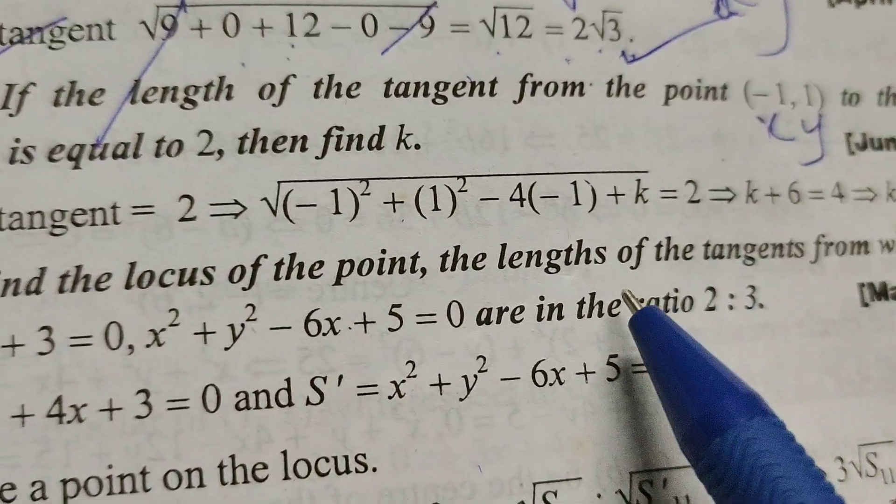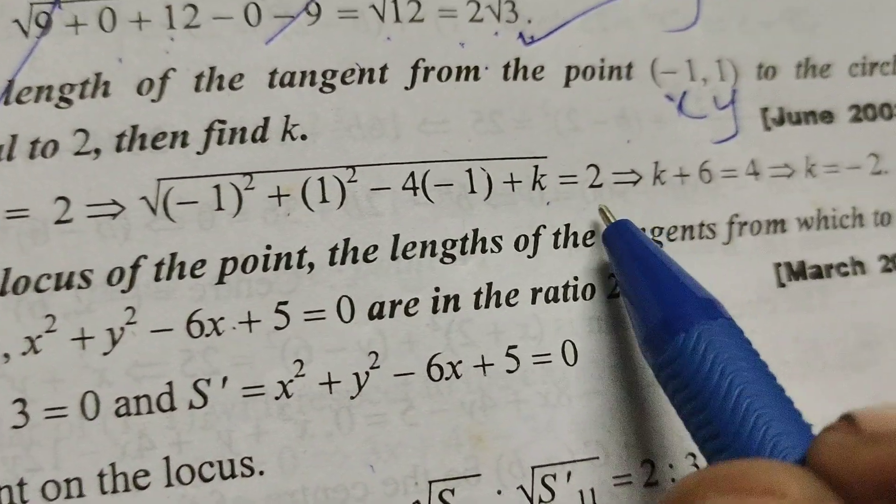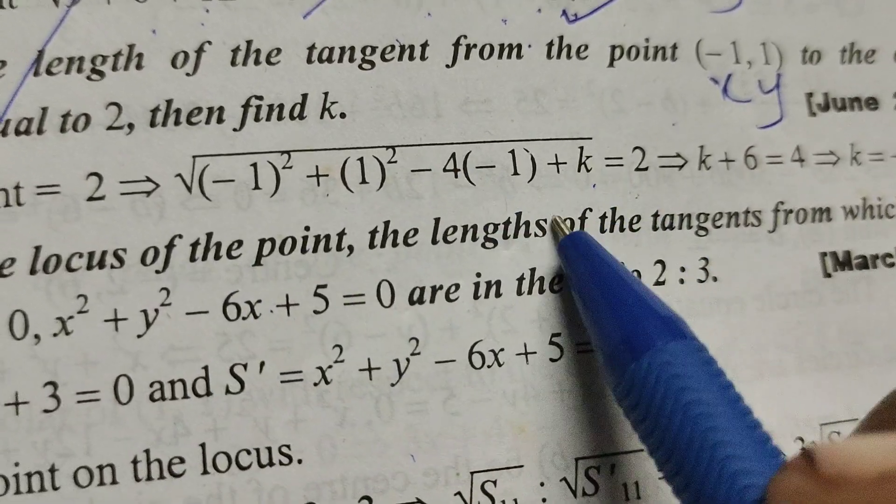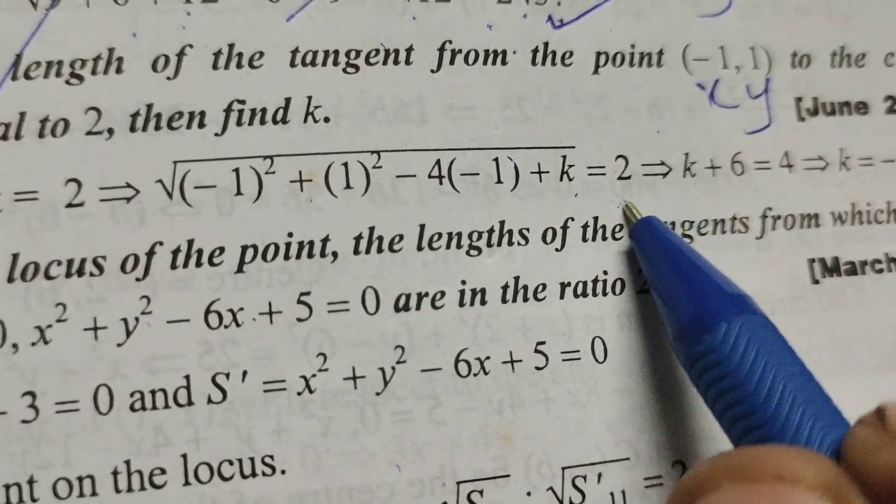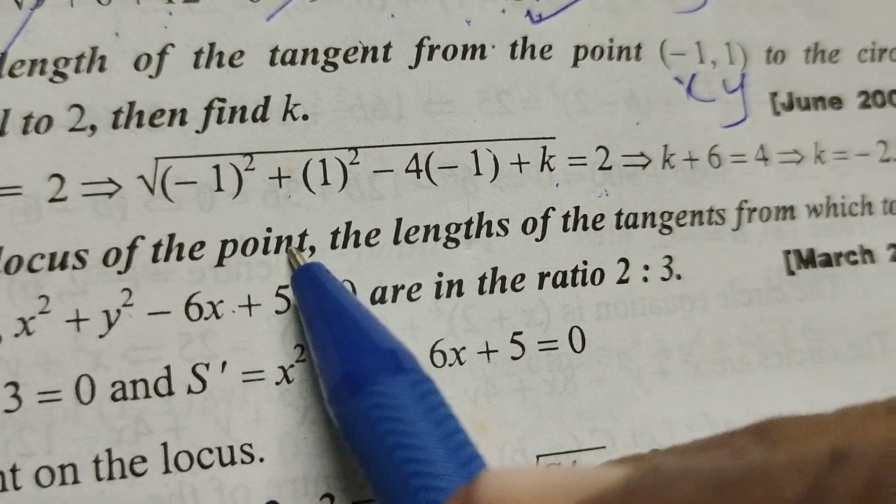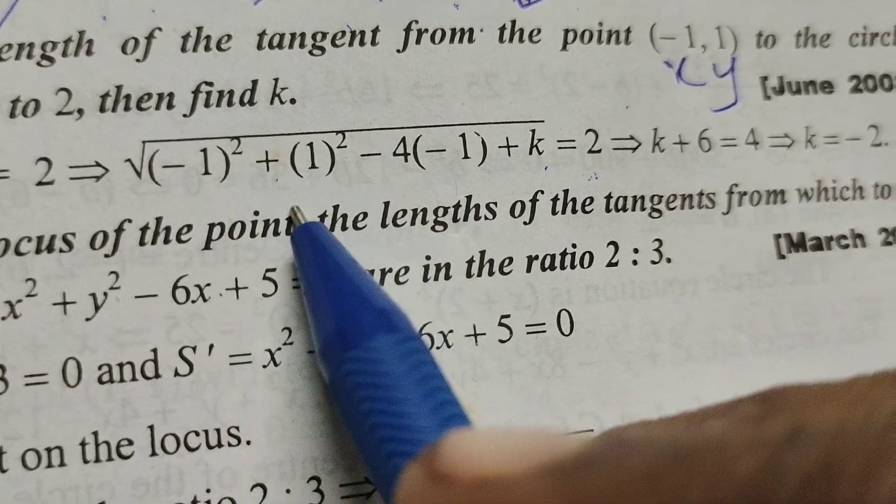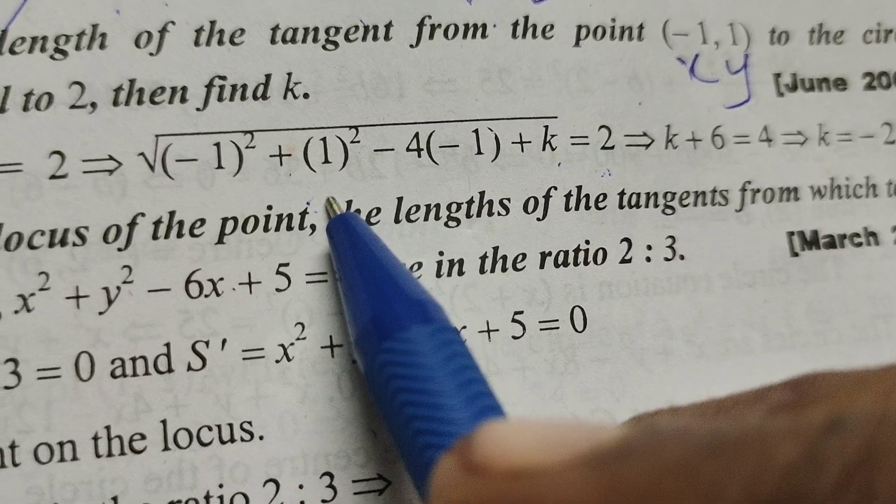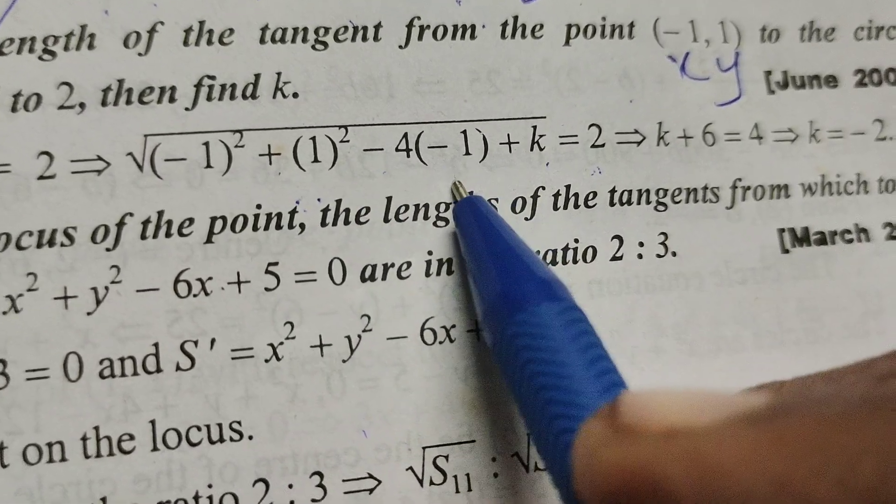plus k equals to, and this length of tangent equals to 2. Therefore, if you create this, minus 1 whole square means plus 1, 1 square 1, 2, 2 plus 4